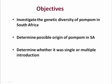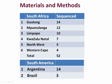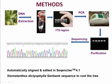The objectives of this study were to investigate the genetic diversity of Pong Pong weed in South Africa, to determine the possible origin of Pong Pong weed in South Africa so as to do effective sampling in the native range, and also to determine whether it is a single or multiple introduction, because multiple introductions will introduce new genetic diversity. We sampled all areas in South Africa where the weed has invaded, with about 52 samples, and also included 14 samples from Argentina and Brazil. After extracting DNA using standard methods, we amplified the ITS region using published primers and then sequenced it to give us the full sequence of bases along that region.